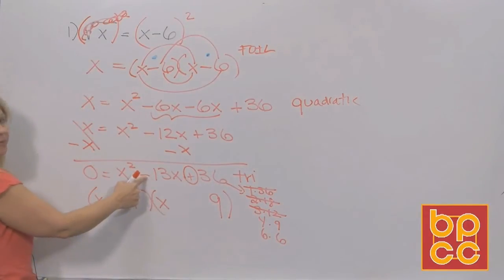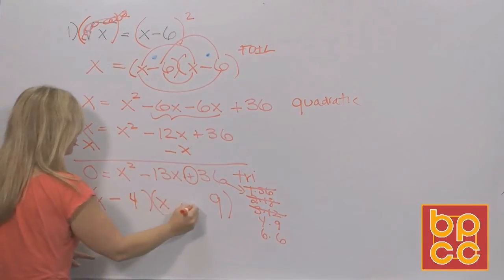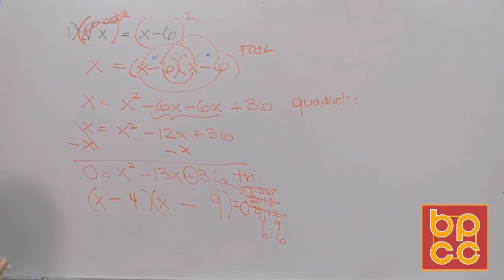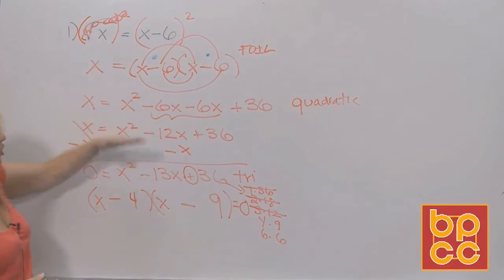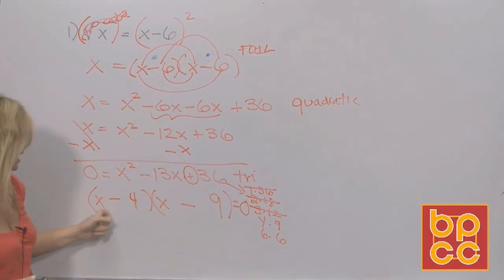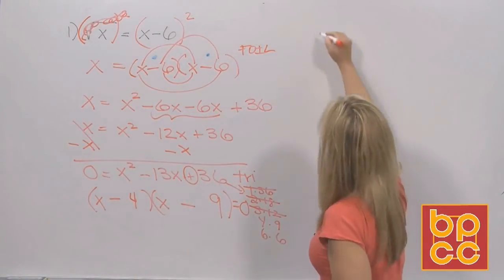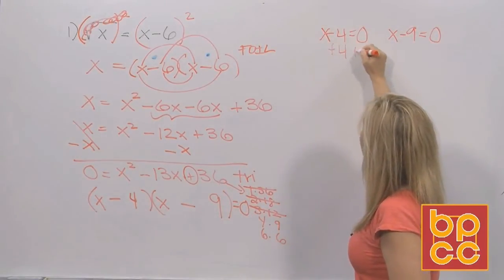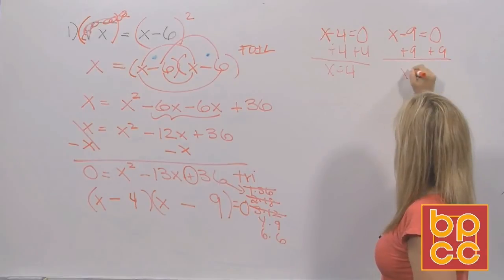I want to add to negative 13, so adding means the signs have to be the same — both negative. So we get (x minus 4)(x minus 9) equals zero. Now we went from quadratic with x squared back to linear — you have two x's. Setting each factor equal to zero and solving each linear equation gives a first solution of x equals 4 and a second solution of x equals 9.